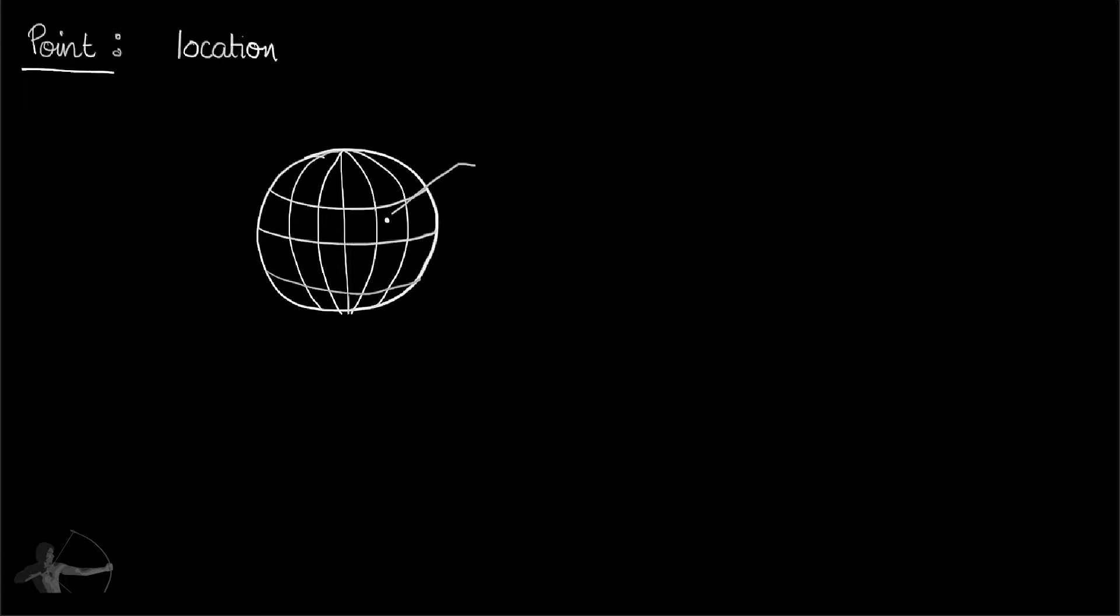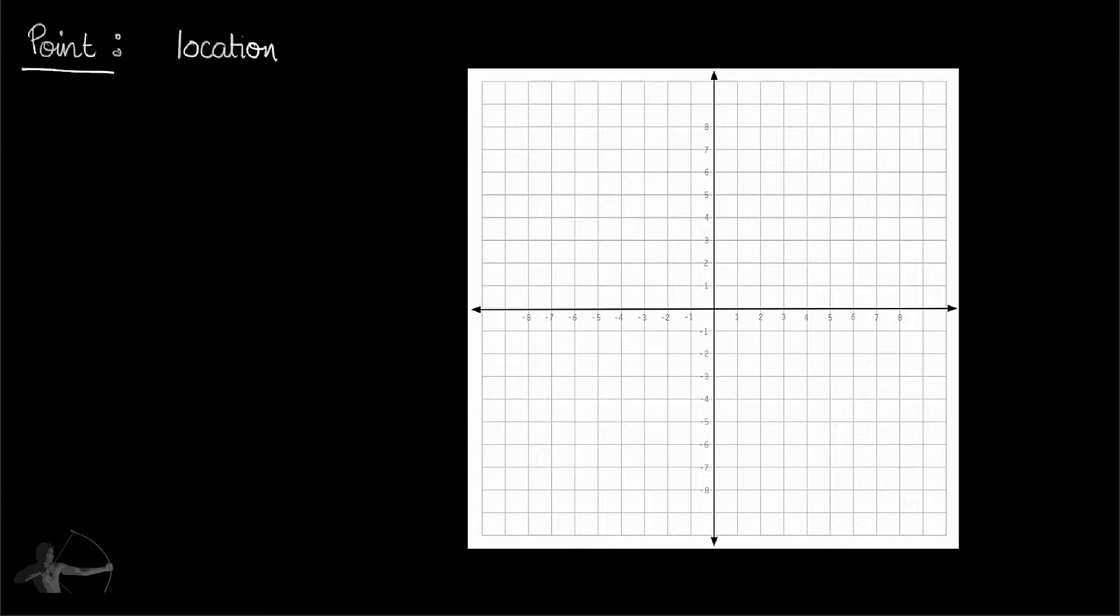For example, longitude and latitude is a point defined on Earth. Similarly, we can define a point on a graph. This is a point defined at 2x and 2y on this graph paper. This is a location on this graph.